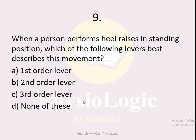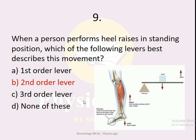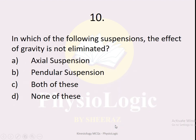MCQ number nine: when a person performs heel raises in standing position, which lever best describes this movement? The correct option is second-order lever. In a second-order lever, the load is at the center point. Here the fulcrum is the metatarsophalangeal joint, the effort is provided by the calf muscles, and the weight of the body acts in between the fulcrum and the effort — making this a second-order lever.